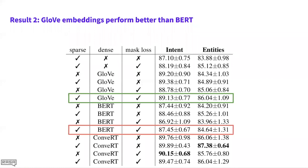The second counterintuitive result is that GloVe — a word vector model where word representations are not contextual and don't depend on word order — actually outperforms BERT. BERT is a much slower, much larger, heavier model, so you'd think it would give lots of benefit, trained on far more data with far more computation. But in our setup, we found that GloVe features cause DIET to perform better than using BERT as a featurizer, which is really interesting.